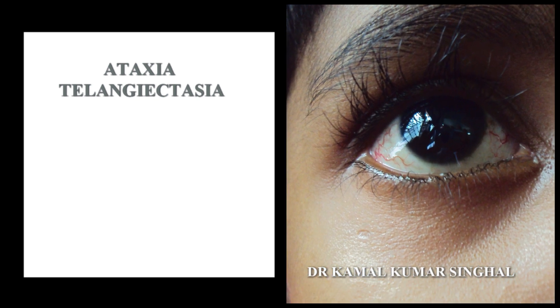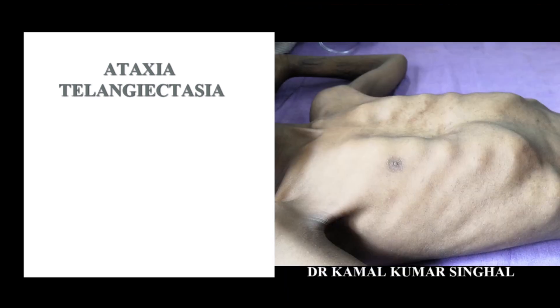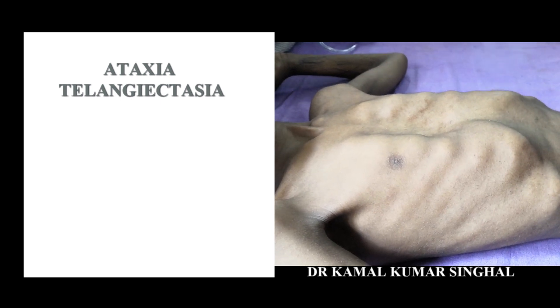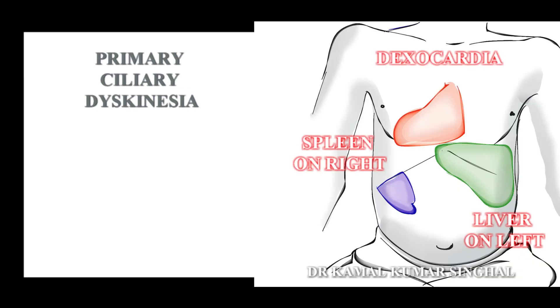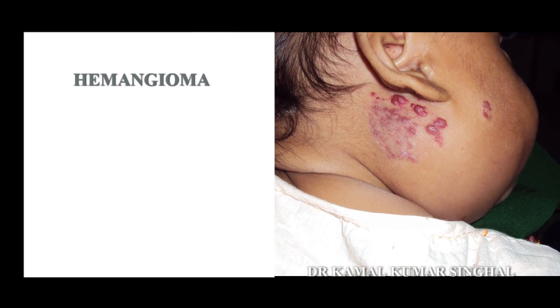In general physical examination, make note of any conspicuous finding. If it belongs to a particular system, you may present the details in the systemic examination. These findings may initially seem unrelated, but a complete evaluation may suggest a connection with a respiratory diagnosis. For example, telangiectasia of the conjunctiva suggests the diagnosis of ataxia telangiectasia in a child with chronic respiratory failure. Situs inversus will suggest a diagnosis of primary ciliary dyskinesia in a child with bronchiectasis. In a child with stridor, presence of hemangioma in the beard area of the face will suggest airway hemangioma.